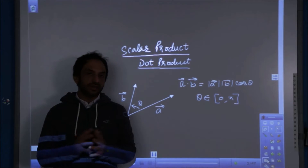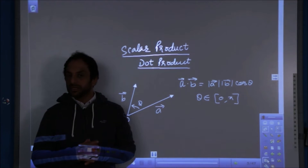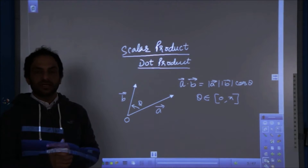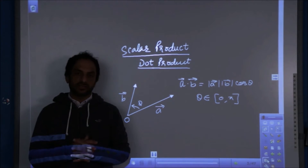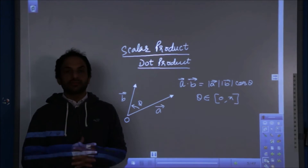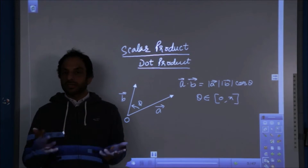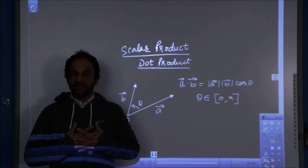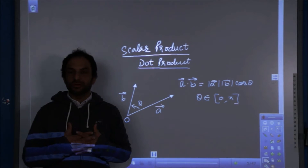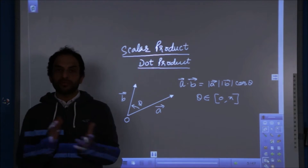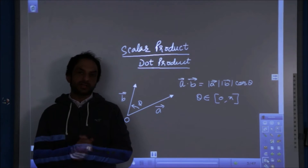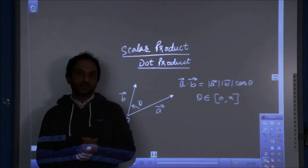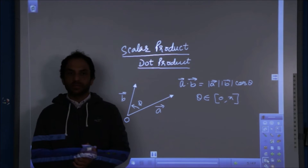If none of the vectors is a zero vector, then theta will be defined. But if at least one of the vectors is a zero vector, theta will not be defined and A dot B will be zero. So if all vectors are proper vectors, the dot product is the product of their moduli multiplied with cos of the angle between them.